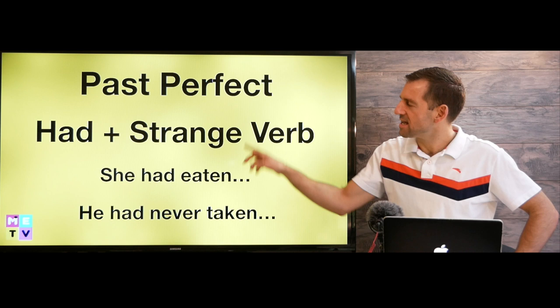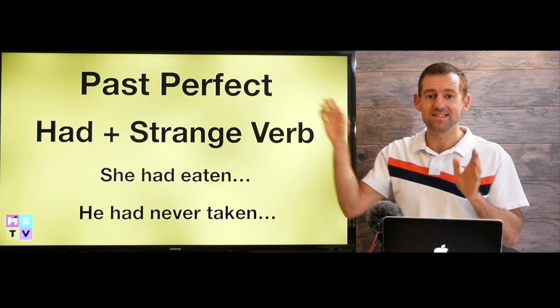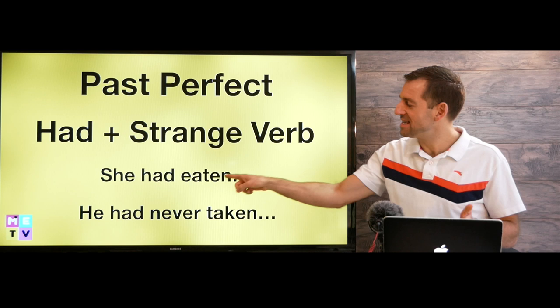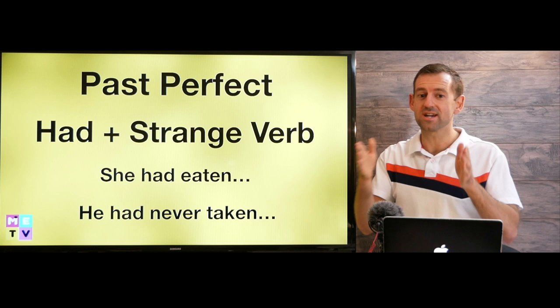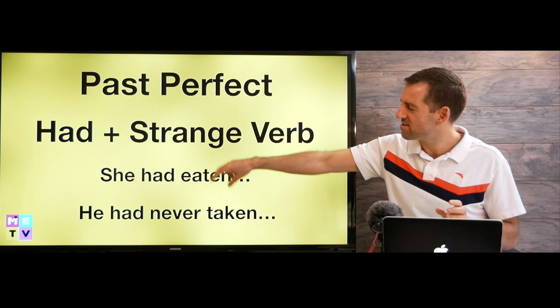Now, if it's the perfect continuous tense, then we don't use past participles. The perfect continuous would be 'she had been eating' — we have the '-ing' ending on 'eat', because all the continuous tenses have '-ing'. But if it's just a perfect tense, then we use those irregular past participles.